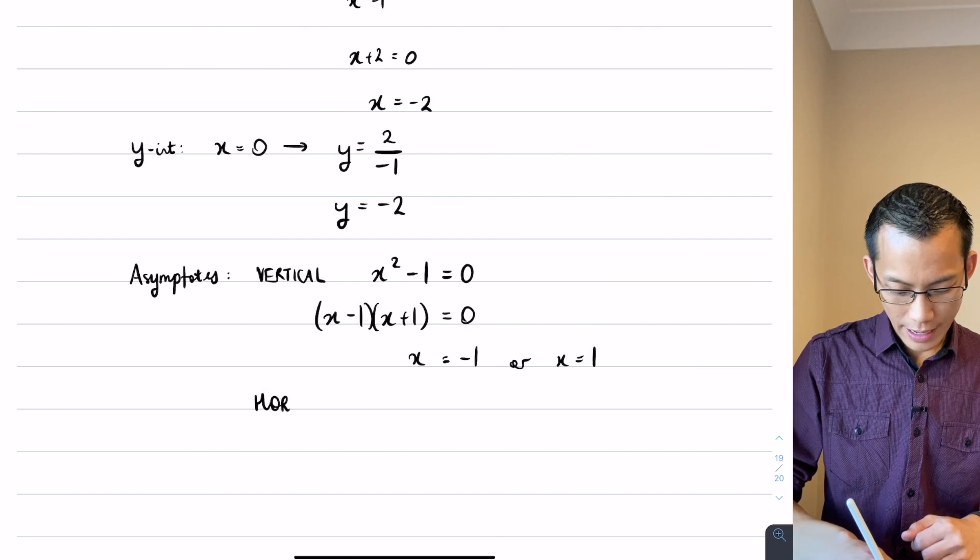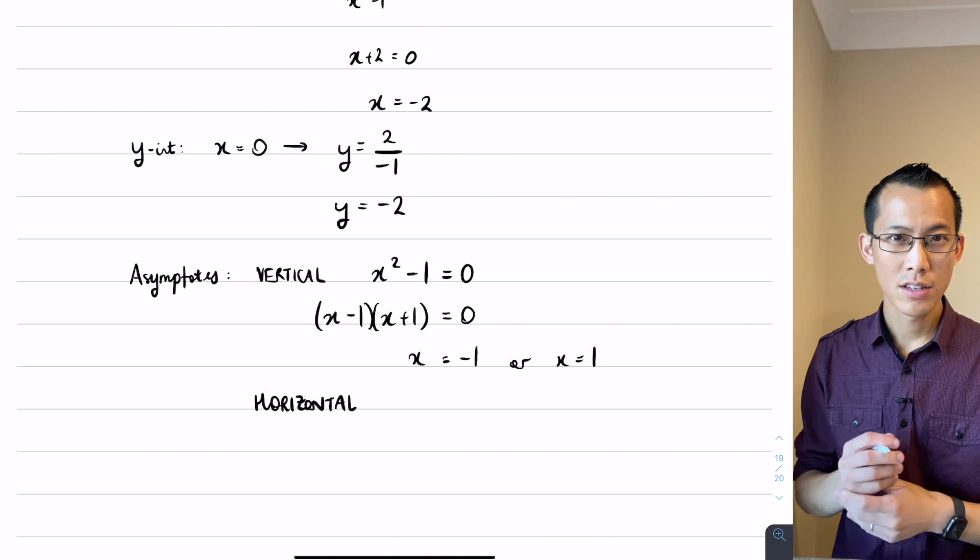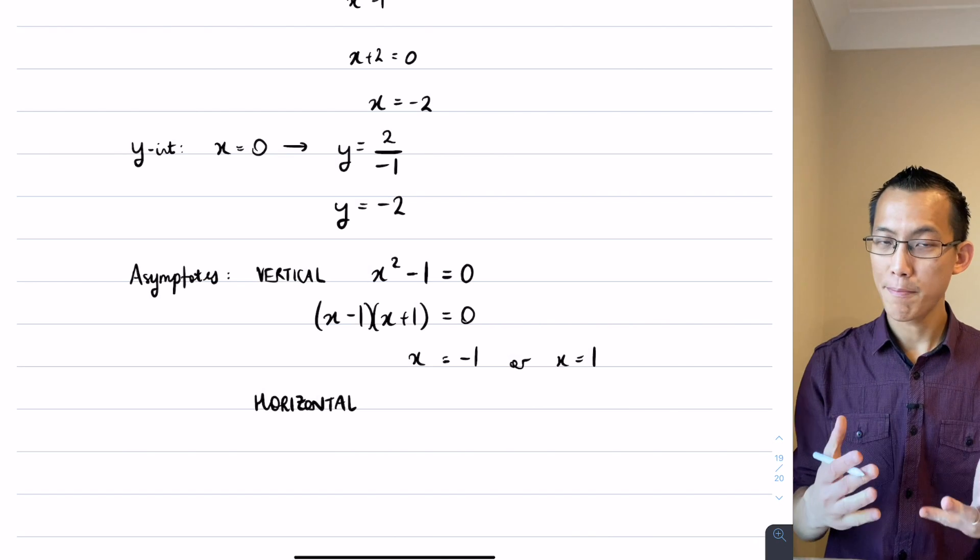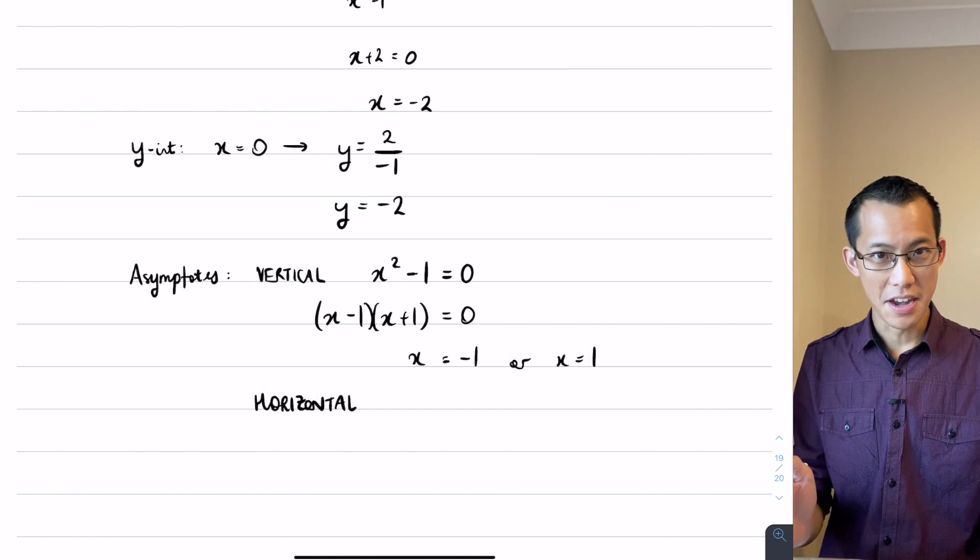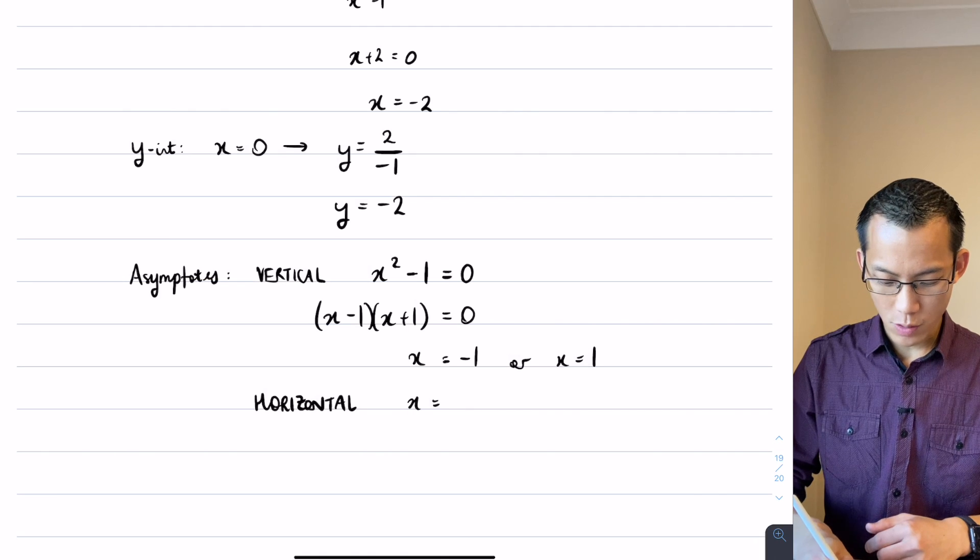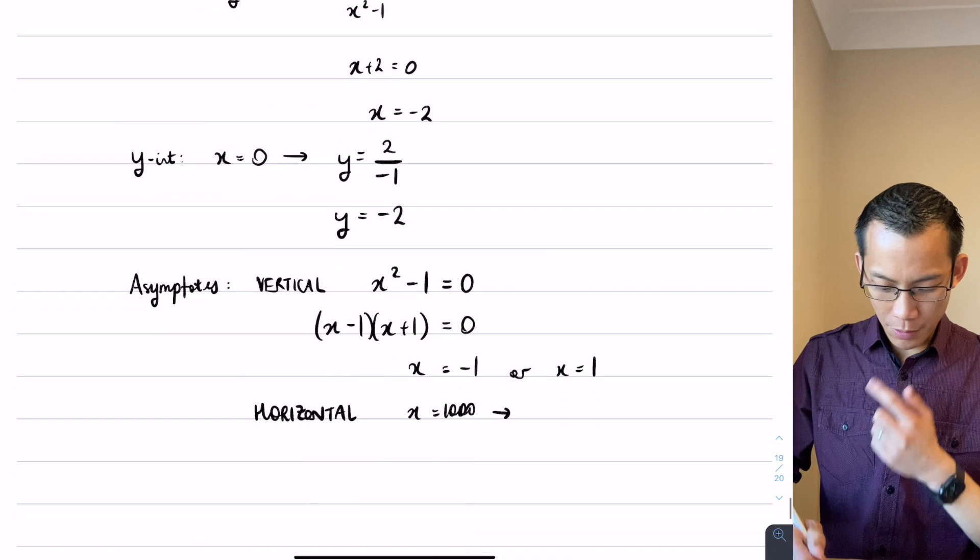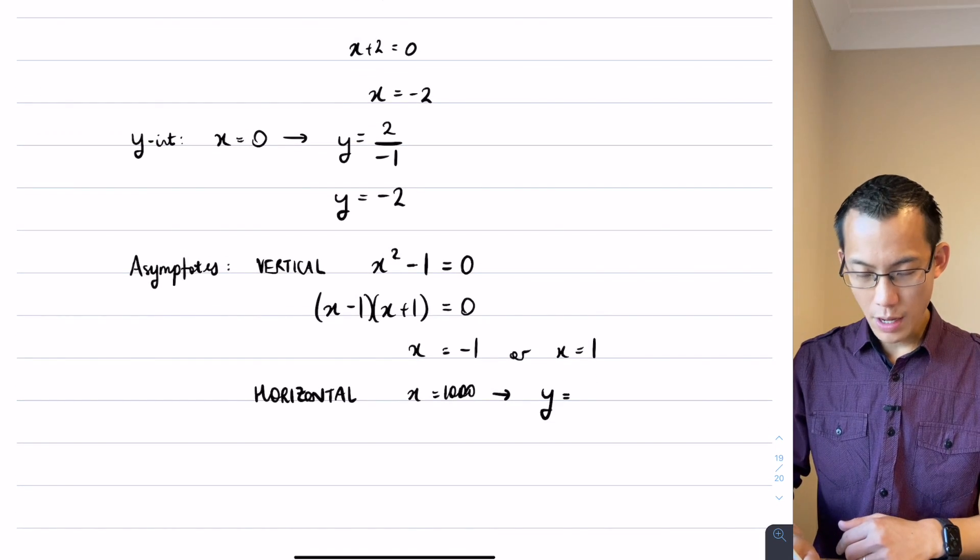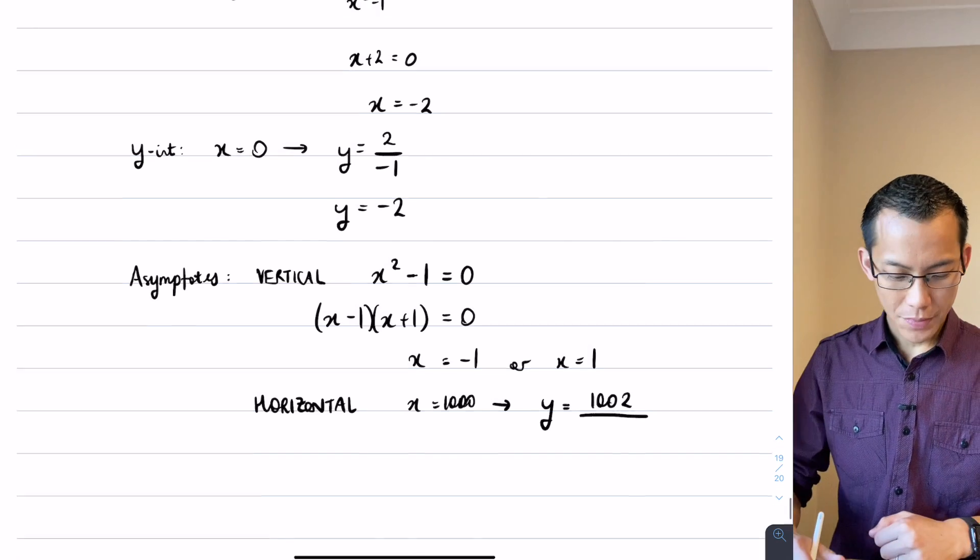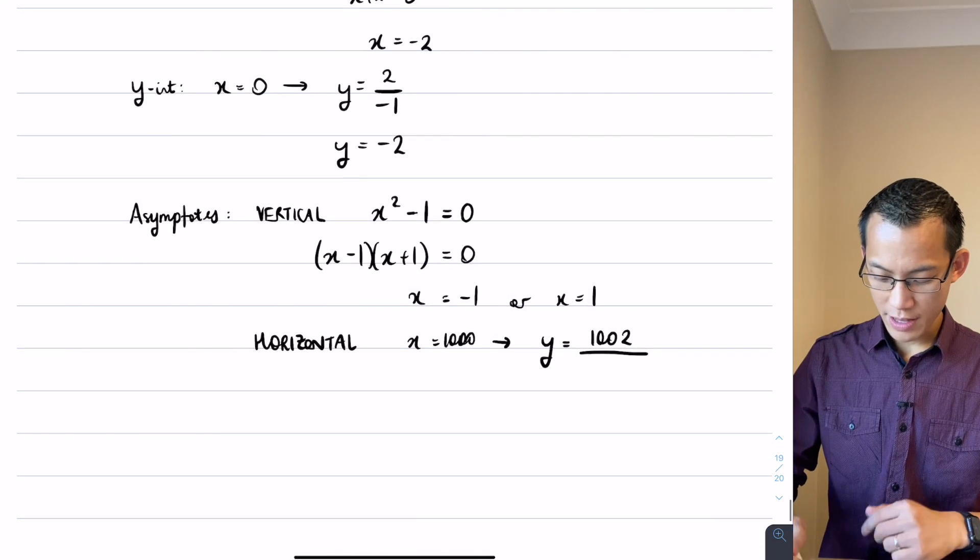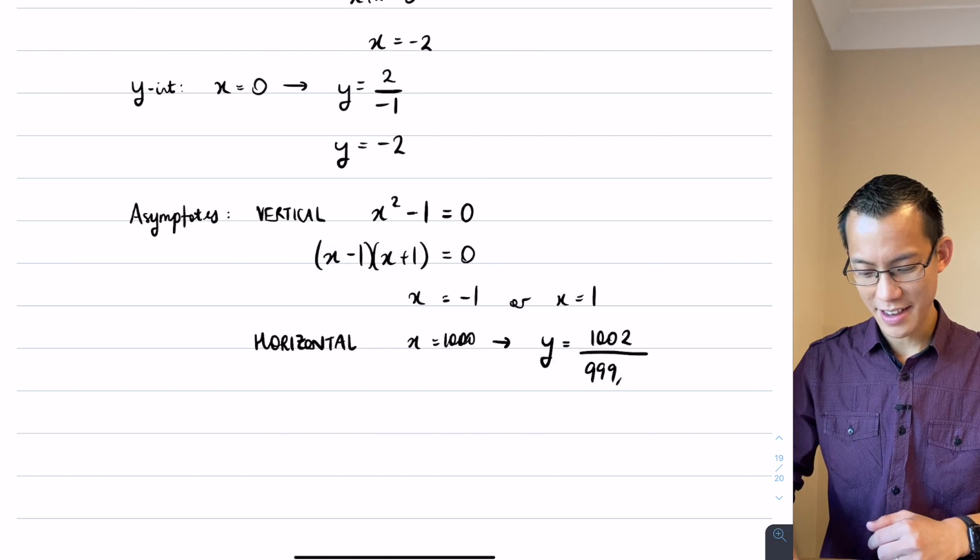Then lastly, let's work out our horizontal asymptotes. Now like I mentioned before, there's lots of ways to work this out but probably the simplest way is just to throw in some very large positive values and some very large negative values. So if I say x equals a thousand, what would that mean? If I go to this function here, you can see I'm going to get y equals a thousand plus two, which is a thousand and two, divided by a thousand squared, so it's going to be a million minus one. So that's 999,999.